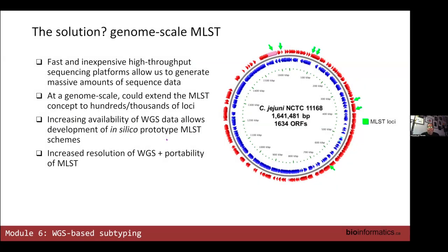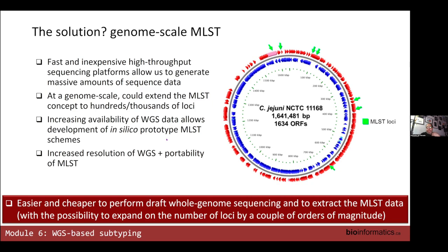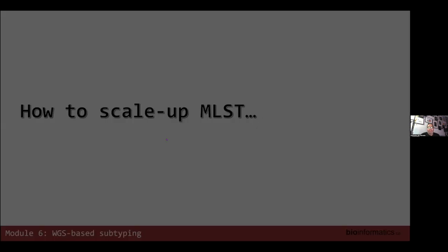Now that we have whole genome sequence data, applying MLST at the genome scale became a very attractive proposition, because we already have an overall approach for dealing with the data and existing databases. Why not just apply MLST on the genome scale? Especially given that we've gone through several iterations of high-throughput sequencing — the newest platforms can generate genome sequence data at such a low price point that it would actually be cheaper to generate whole genome sequence data for an isolate than to perform old-school MLST by doing PCR and sequencing of the seven individual loci.